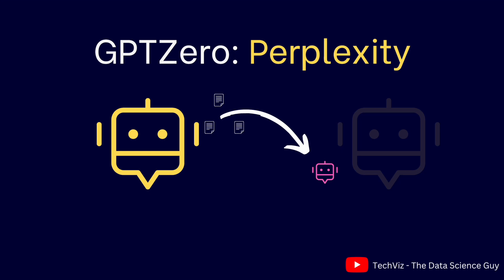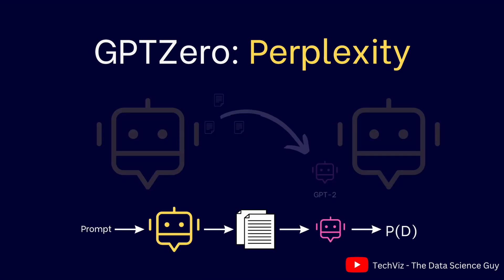One of the ways you can go about training this model — because you might be asking how, since GPT-3 doesn't give confidence scores — is to train a student model, consider this to be GPT-2 (shown as the pink colored bot), which is trained on the output generated by GPT-3 or an equivalent language model. When a new prompt comes in, it first goes to GPT-3 which generates text, and then we pass that text to our smaller GPT model, which calculates the perplexity and outputs whether the document was written by AI or not.